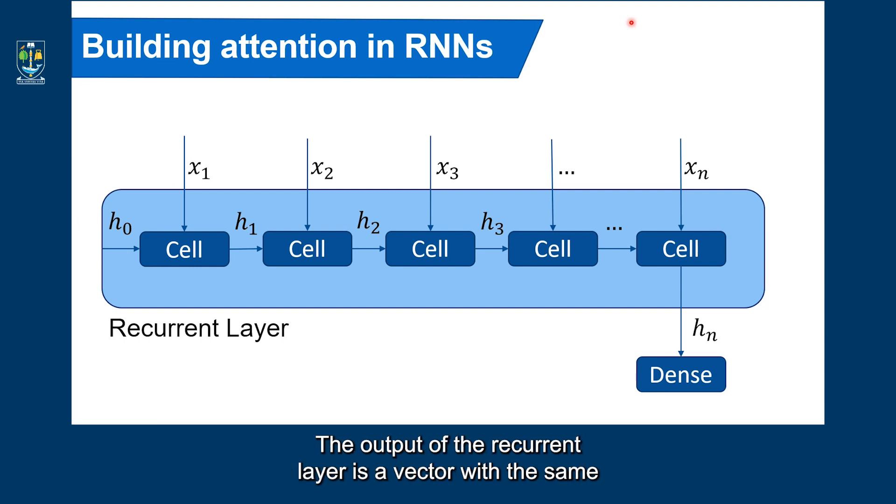The output of the recurrent layer is a vector with the same length as the number of units in the recursive neural network layer. This can be fed to a dense layer with the softmax output to predict the distribution for the next node, or the next word, or the next ECG bit, for example, in the sequence we are observing.